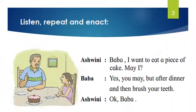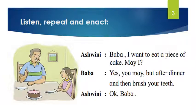In the second picture, you can see Ashwini with her father. Ashwini says, 'Baba, I want to eat a piece of cake. May I?' Ashwini is asking her father that she wishes to eat a piece of cake. Now let's see what Baba says. Baba says, 'Yes, you may, but after dinner, and then brush your teeth.'